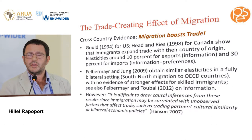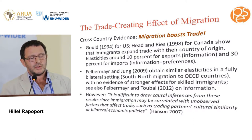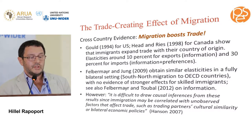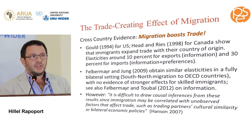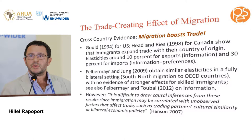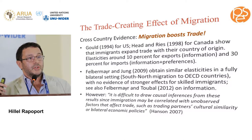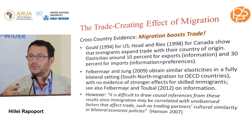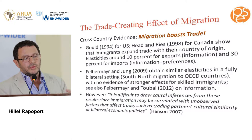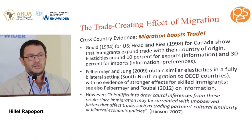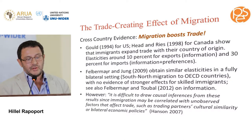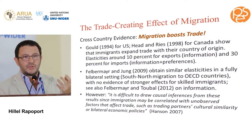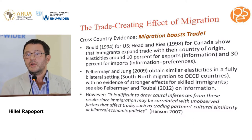In economics, this started with work by Jim Rauch studying ethnic Chinese networks, showing that Chinese diasporas improve trade — mostly between countries that both have a Chinese diaspora, such as Thailand and the US. The argument is that they reduce information asymmetry and improve trust. The beneficial effect of migration shows up only for trade in heterogeneous goods — where there is an information problem — but not for homogenous goods such as commodities.